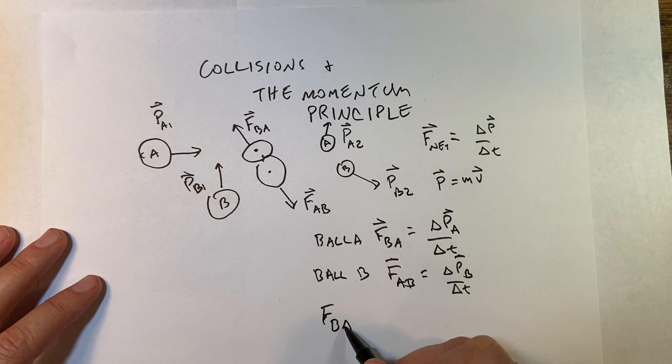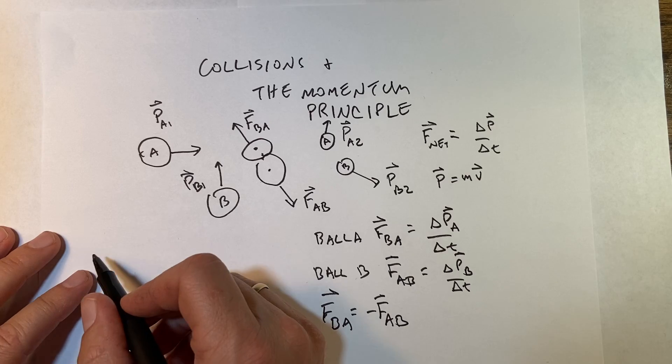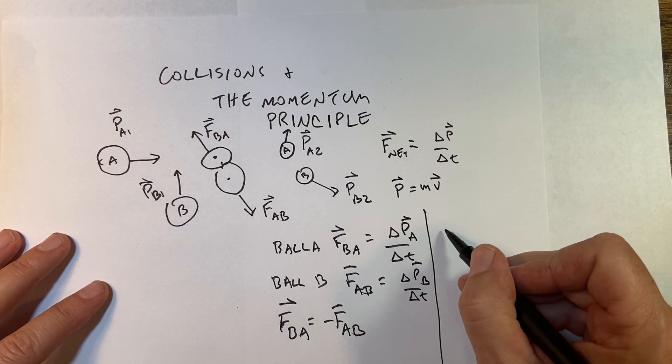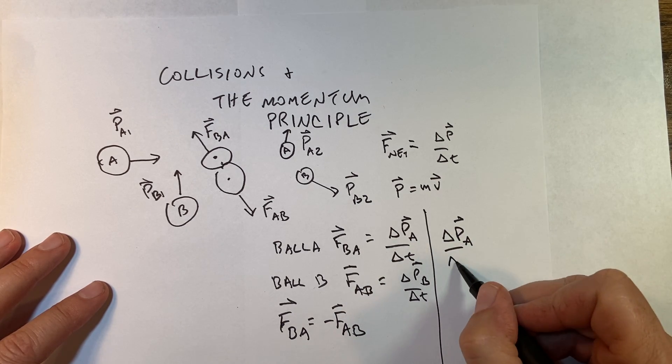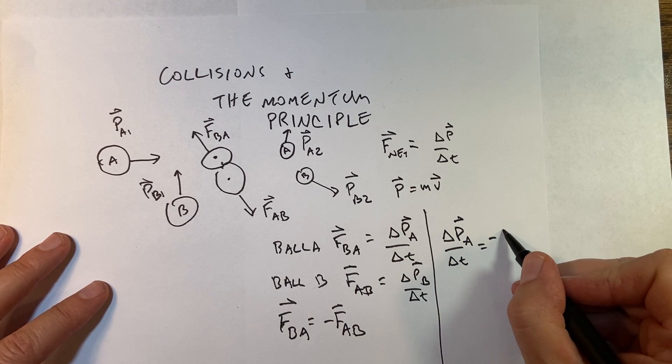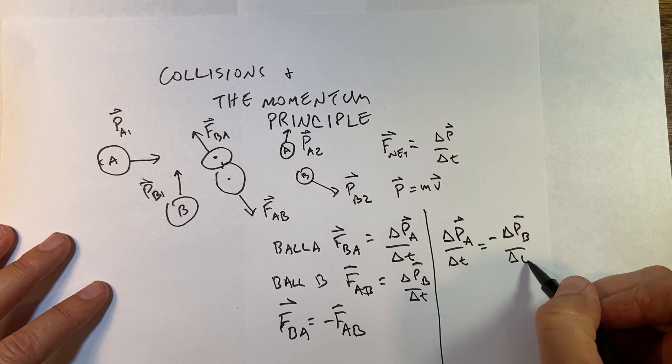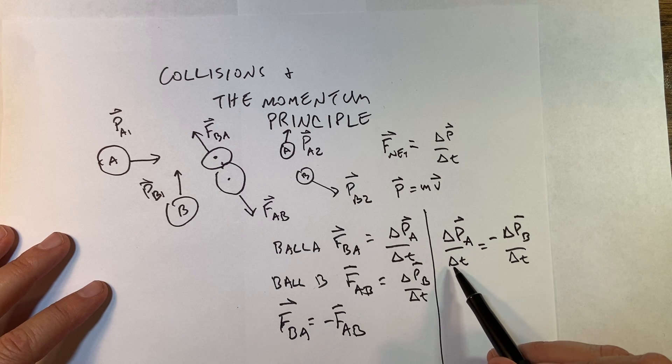So that means that this has to be the negative of that. Let's put it right here. So that means delta p_A over delta t equals negative delta p_B over delta t, because the forces are equal and opposite.